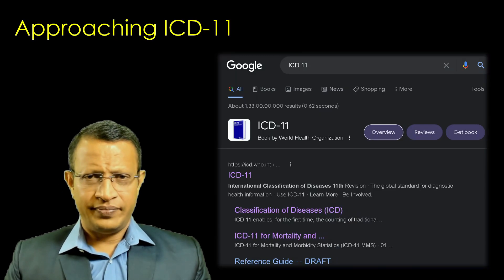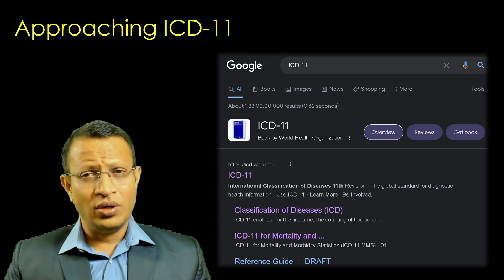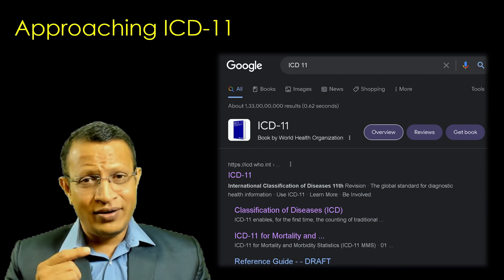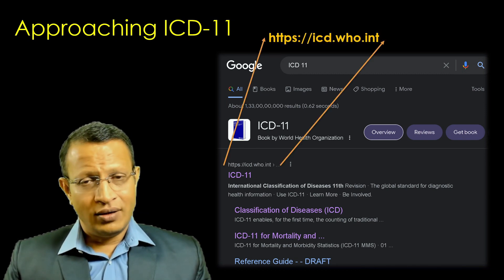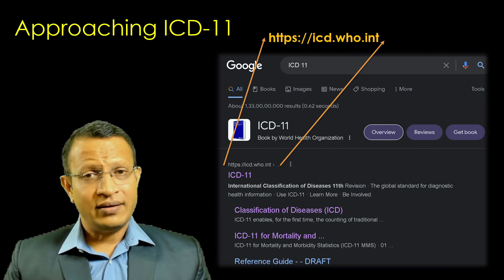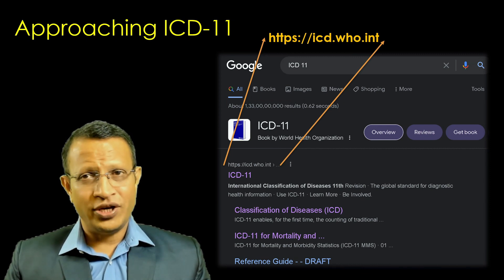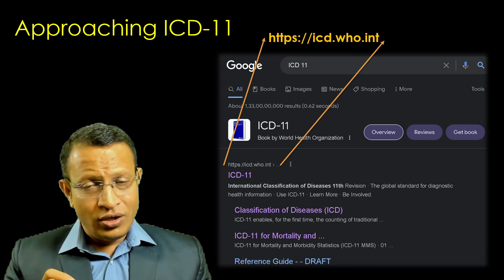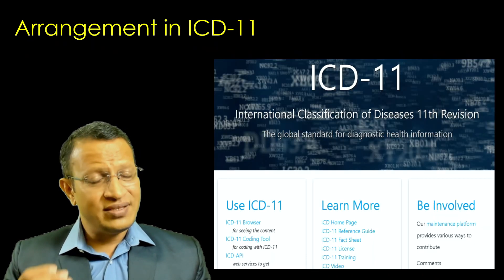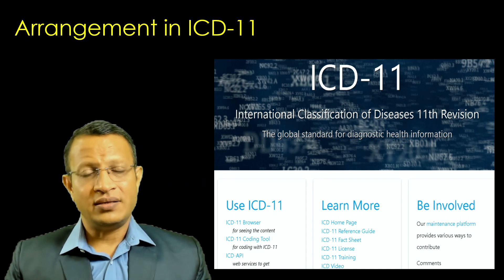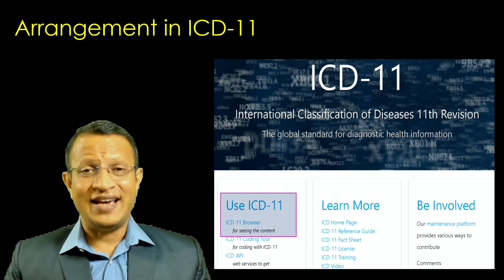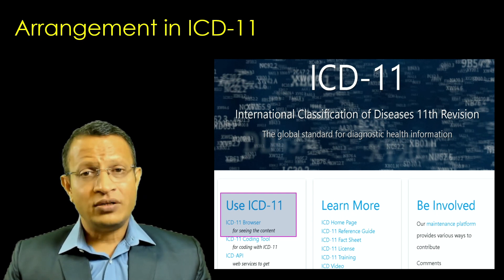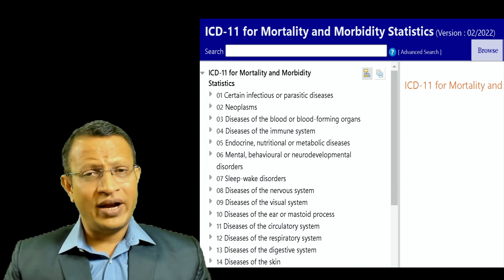How to approach ICD-11? If you type ICD-11 in the Google browser, the first link available is icd.who.int. This is the browser which will be used to learn about ICD-11. When searched on the Google engine, the first result is the ICD-11 browser, showing ICD-11 in a tabular format.